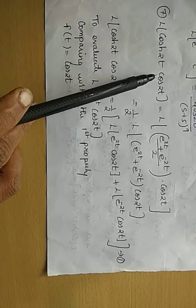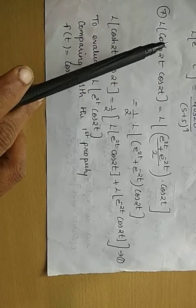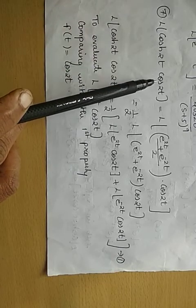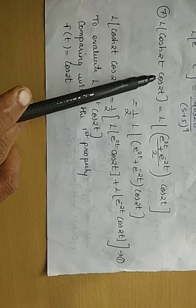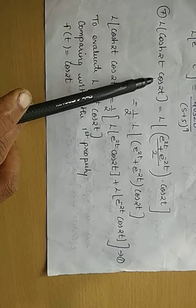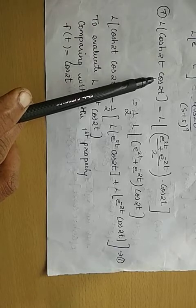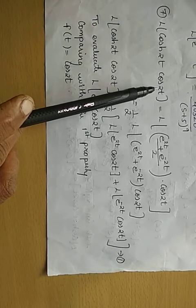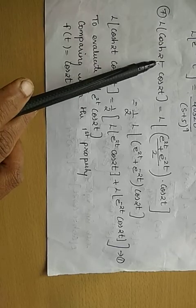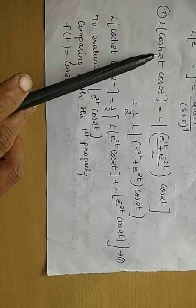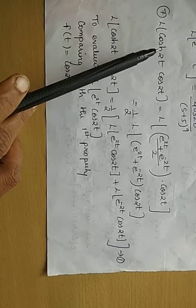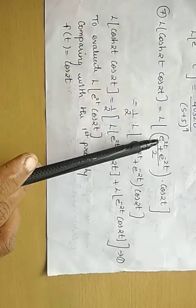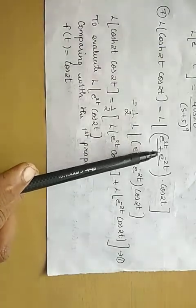Here we cannot apply transformation formulae because one function is hyperbolic and the other is trigonometric. Transformation formulae apply only when both are trigonometric, as in the previous video. Since a hyperbolic function is present, we should always convert it into exponential form.